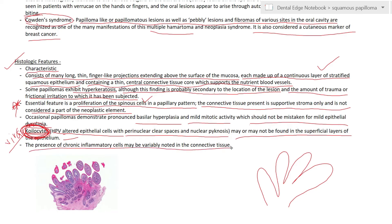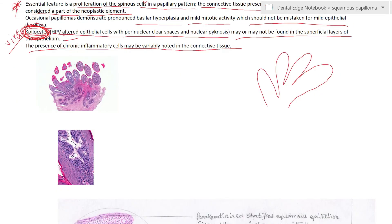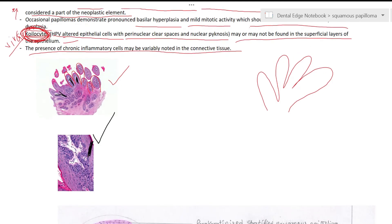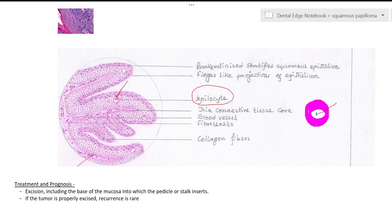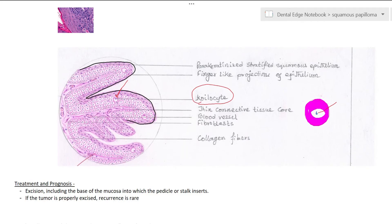Chronic inflammatory cells may be variably noted in the connective tissue. For slide identification in exams, you should appreciate the small finger-like projections and the thin connective tissue core. In the diagram, you need to show: finger-like projections, parakaratinized stratified squamous epithelium, presence of coilocytes, and the thin connective tissue core.